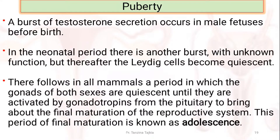A burst of testosterone secretion occurs in the male fetus before birth. In the neonatal period, there is another burst of unknown function, but thereafter the Leydig cells become quiescent. There follows in all mammals a period in which the gonads of both sexes are quiescent until they are activated by gonadotropins from the pituitary to bring about the final maturation of the reproductive system. This final period of maturation is known as adolescence.